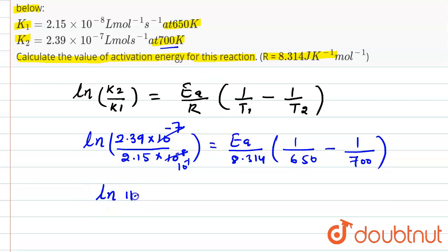ln of 11.116, 11.116, and that will be multiplied by 8.314. And if you take this LCM, so that is equal to activation energy. So take first, take LCM, then we will do the calculation. So here we have this activation energy that is multiplied by, if you take the LCM, the